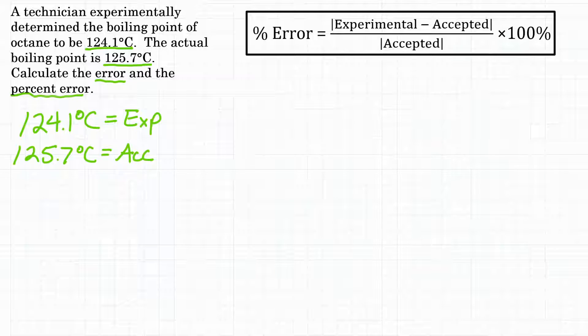So up in the top right, we have the percent error calculation. So that's what we're going to use to calculate percent error. Now, the question is also asking for just the error. What is that? Well, error itself is just the experimental value minus the accepted. So that's in the percent error equation. It's basically this part right here, your experimental minus your accepted. That's also known as just your error.